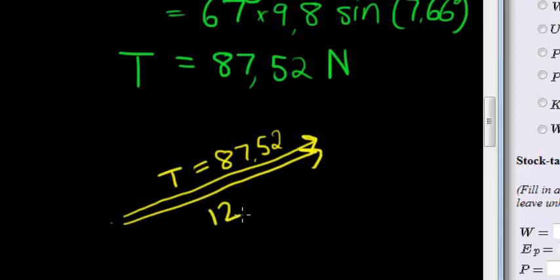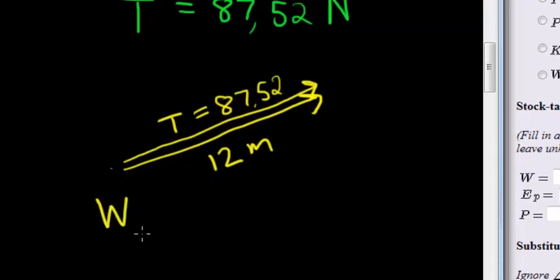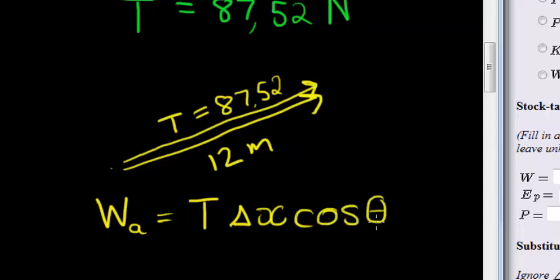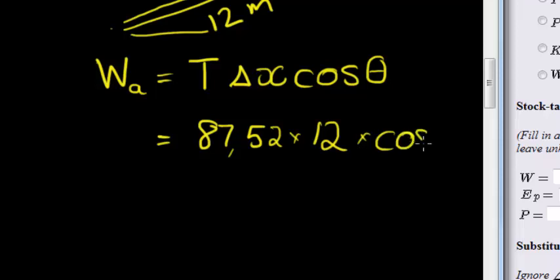And the distance is 12 meters, it's up that incline. So all we have to do is the work applied is equal to the force T times the displacement times cosine of the angle between them. But this time, that's a different theta. Don't get confused with that theta and this theta, it's not the same one. This theta is the angle between the force and the displacement. This time it's zero, they're in the same direction, so we just keep it as zero.